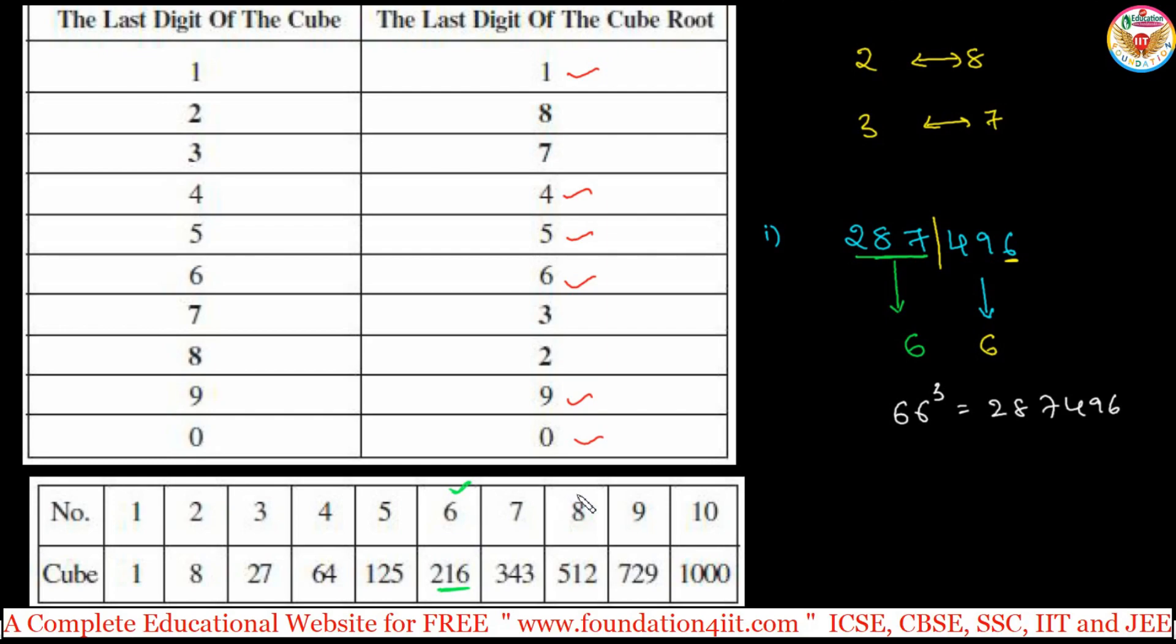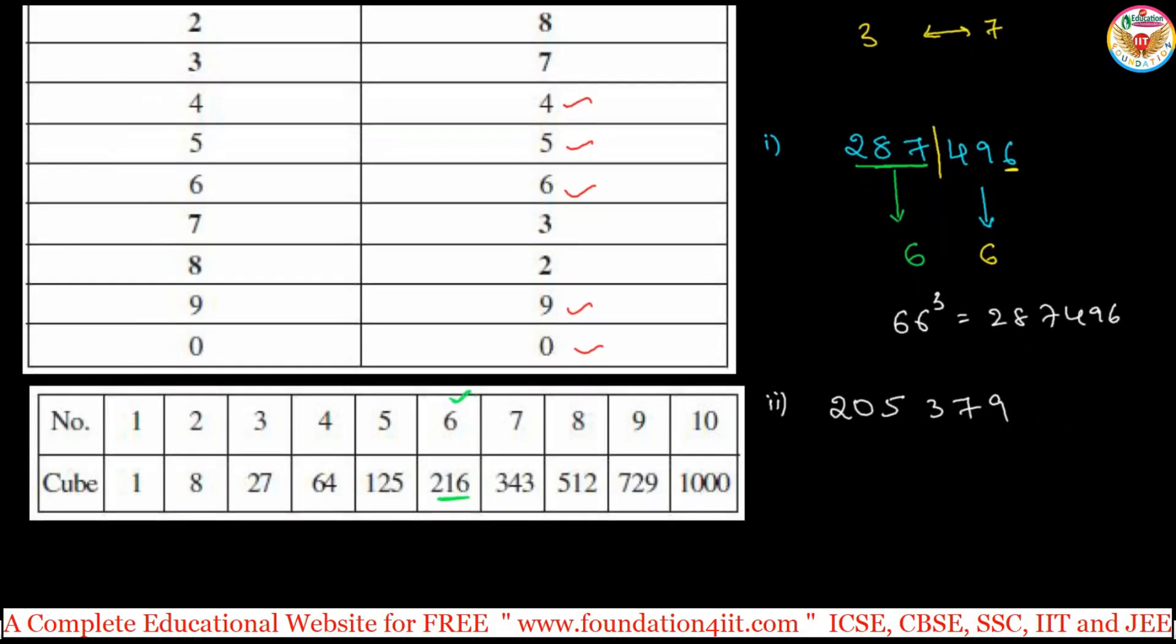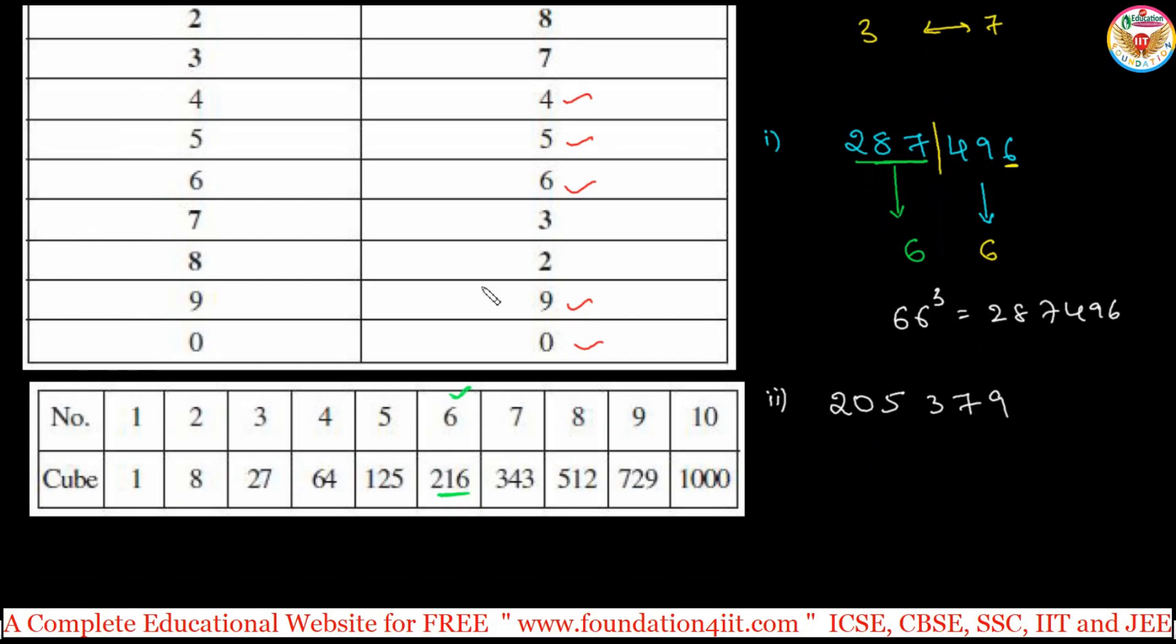Let us see one more example. Let us take second example like this: 205,379. I am taking perfect cubes. So what is the perfect cube of this? Make it units, tens, hundreds separately, one set.